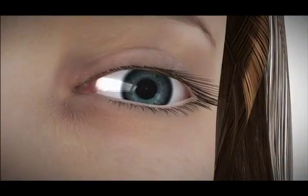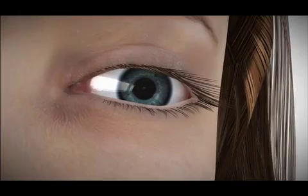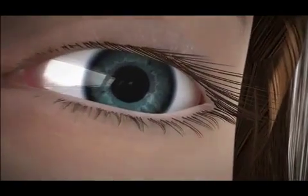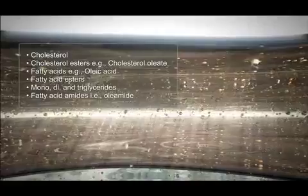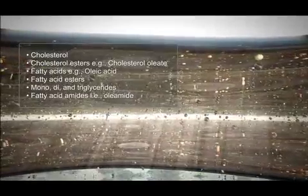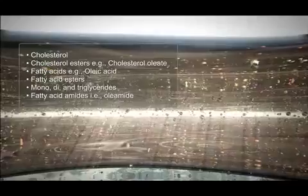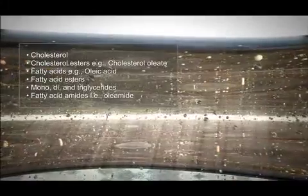Dry eye syndrome is a condition caused by changes in the quantity or quality of your tears. The tear film comprises three layers. The outer lipid layer includes components like cholesterols, fatty acids and phospholipids. Some components serve to increase lubricity and prevent evaporation, while other polar lipids conjoin with some of the mucins to create greater cohesivity of the tear film.